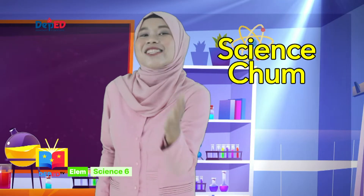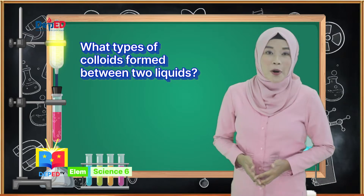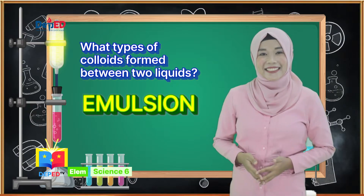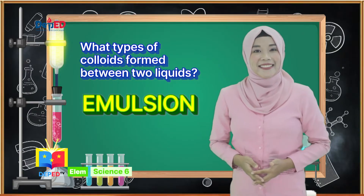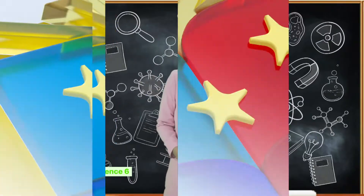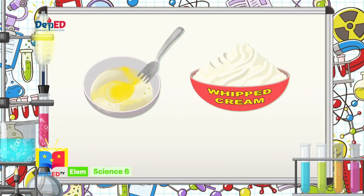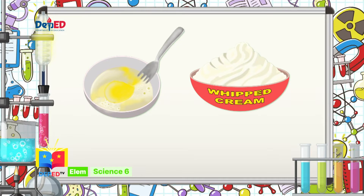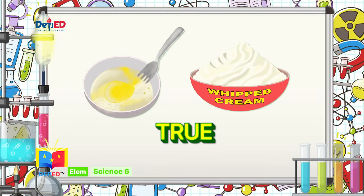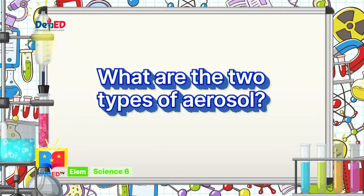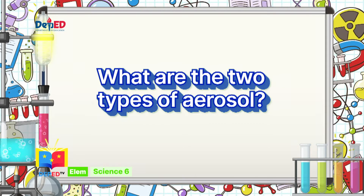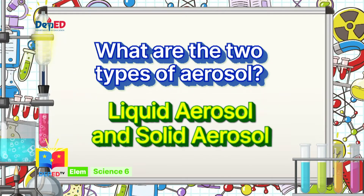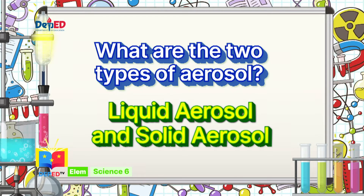You're watching Science John! In our previous episode, you learned about colloids and their characteristics. What types of colloids are formed between two liquids? It is emulsion. True or false: egg white and whipped cream are examples of foam, one of the types of colloids. The correct answer is true. What are the two types of aerosol? The two types of aerosol are liquid aerosol and solid aerosol.